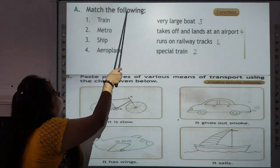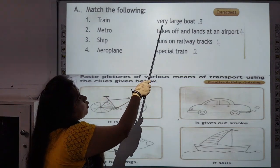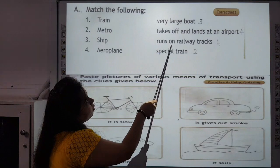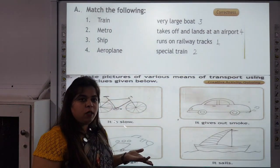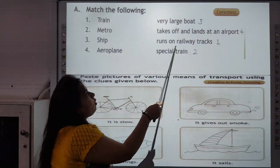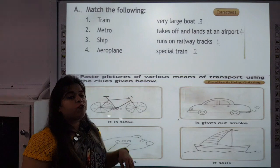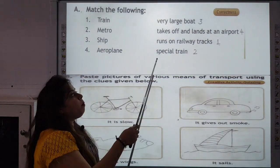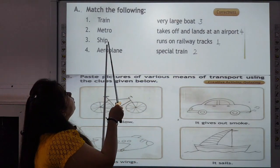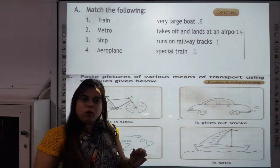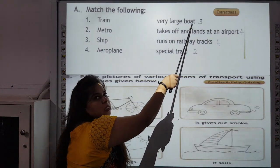Now we will revise the book work. First is match the following: Train, metro, ship and aeroplane matched with: very large boats, takes off and lands at an airport, runs on railway tracks, and special train. Train runs on railway tracks — answer number 1. Metro is a special train — answer number 4. Ship means very large boats — answer number 3. And aeroplane takes off and lands at an airport.